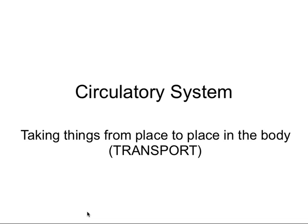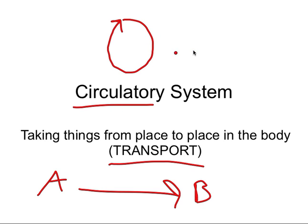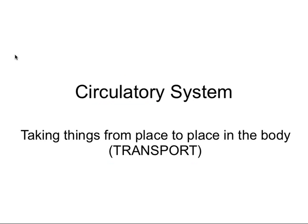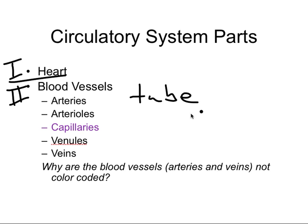Now we're going to talk about the circulatory system. The circulatory system is all about transport — taking things from point A to point B. It's called the circulatory system because it operates in a circular fashion. There are three major parts: first, the heart; second, blood vessels, which are tubes that carry blood and consist of arteries, capillaries, and veins.